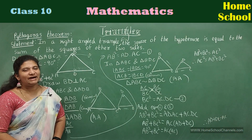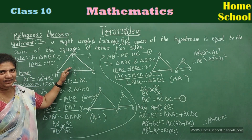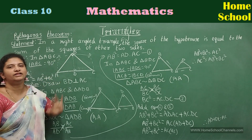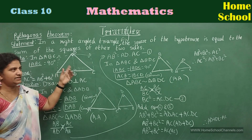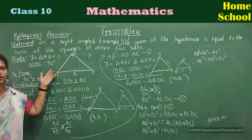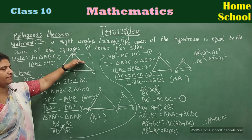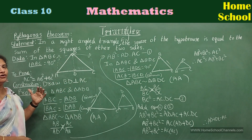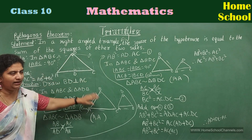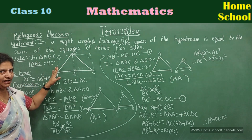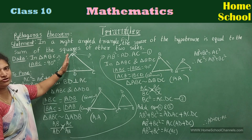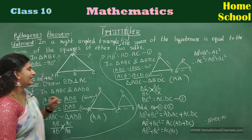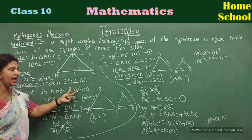Let's quickly have a recap of this theorem. Pythagoras theorem: in a right angled triangle, the square of the hypotenuse is equal to the sum of the squares of the other two sides. Data: in triangle ABC, angle B is a right angle — angle ABC = 90°. To prove: AC² = AB² + BC². Construction: draw BD perpendicular to AC. Proof: we are going to do this in two parts — consider the big triangle and one part of the right triangle.